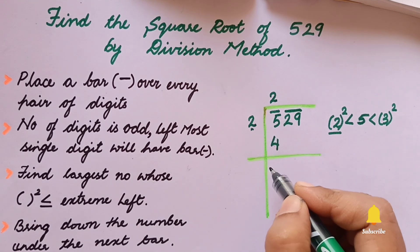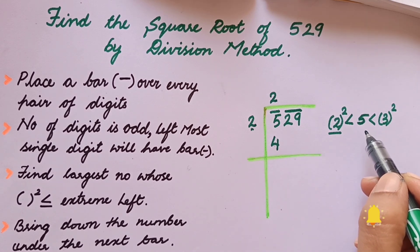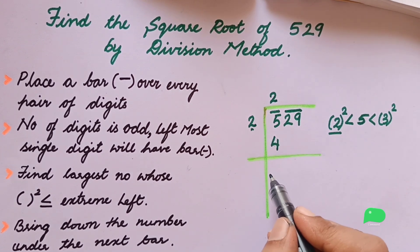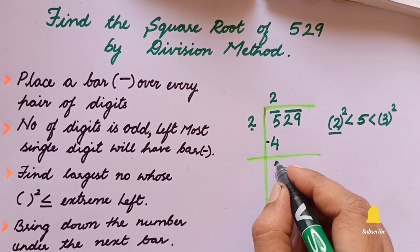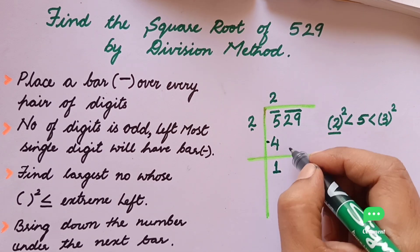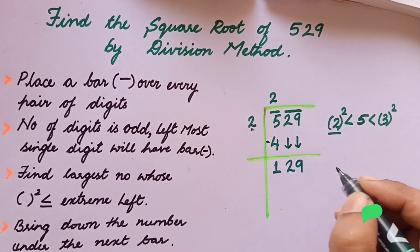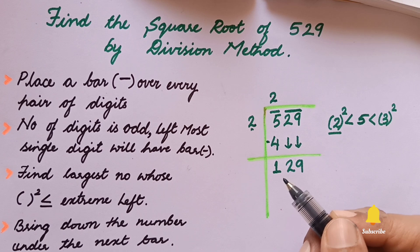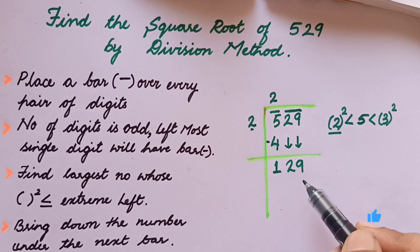Now subtracting: 5 minus 4 is 1. The next step is to bring down the next pair, which is 29. So we now have 129. We have brought down the number under the next bar — that completes the third step.